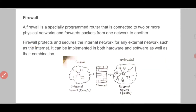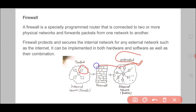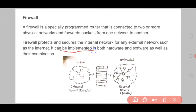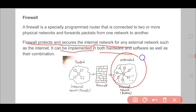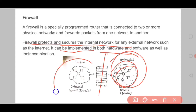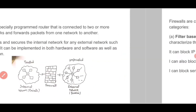Firewall protects and secures the internal network from any external network such as the internet. Suppose you have a laptop and you download something from the internet — the firewall on your PC or laptop, which can be hardware or software, checks whether what you are downloading is authentic or not. It can be implemented in both hardware and software or a combination of both. Its purpose is to protect and secure the internal network from any external network. Any untrusted or external network must pass through the firewall first before entering the internal network.